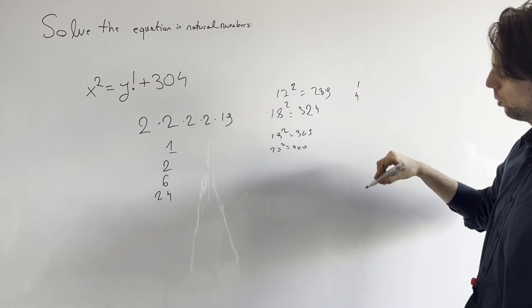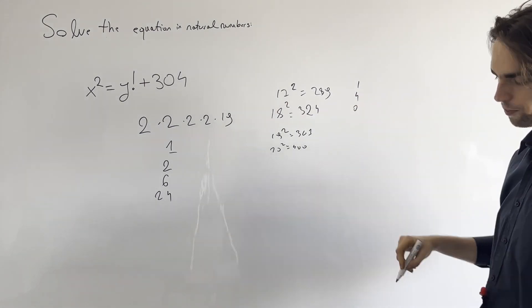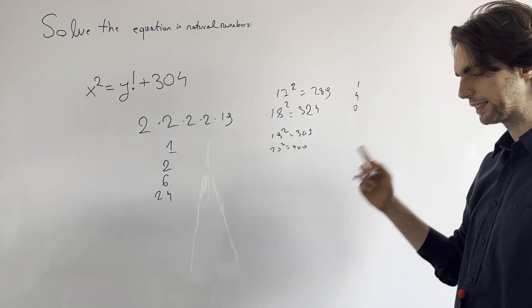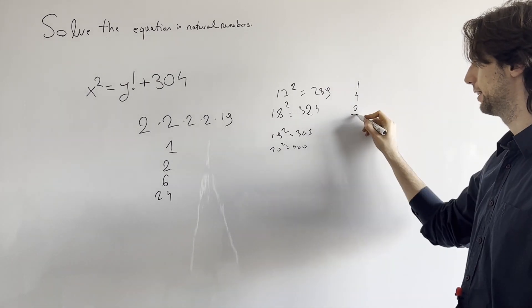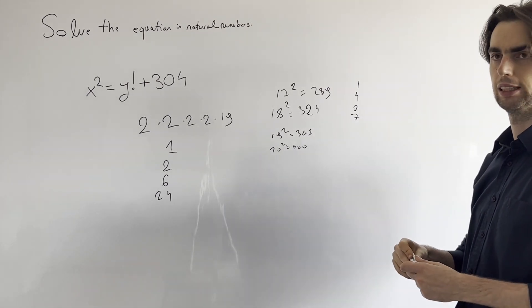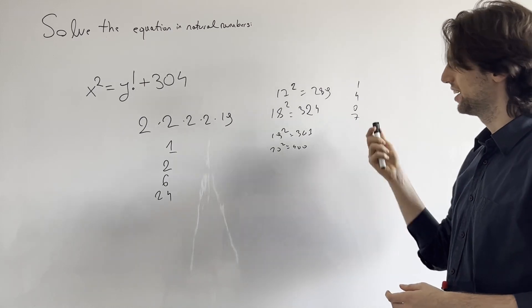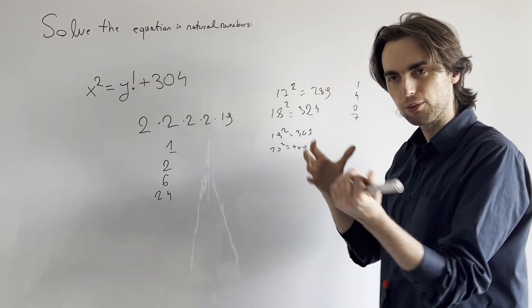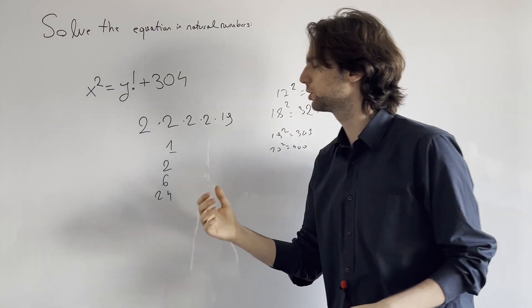What is a modulo 9? We have 1 goes to 1, 2 goes to 4, 3 goes to 0, 4 goes to 16, and it goes to 7. If I'm not mistaken, it goes to 7. So that won't work. We're looking for a good modulo. Let's see. What else do we have?